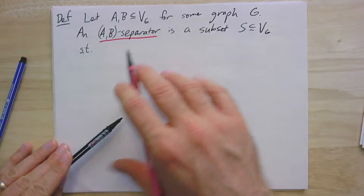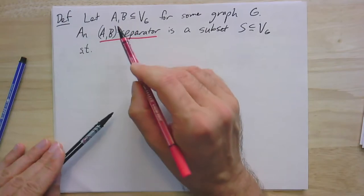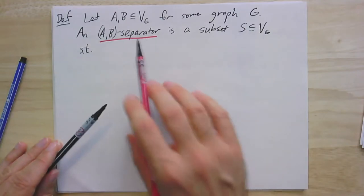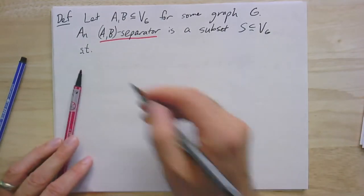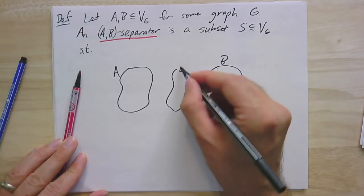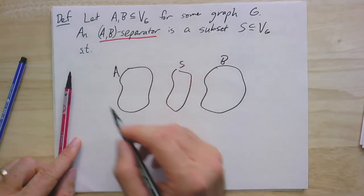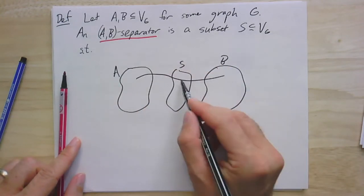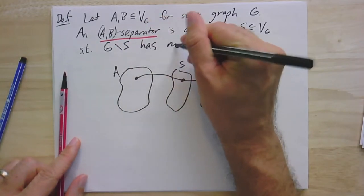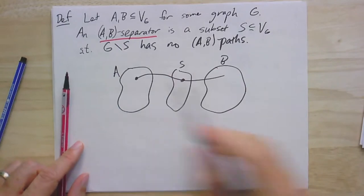For Menger's theorem we were talking about pairs of vertices, but now we have a pair of sets: a set of vertices A and a set of vertices B. The goal is to remove some subset of vertices S such that all A-B paths — all paths going from A to B — have to pass through S. In other words, G minus S has no A-B paths, meaning no path that starts in A and ends in B.